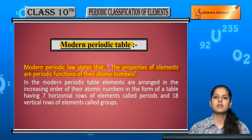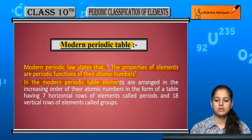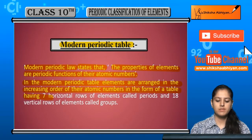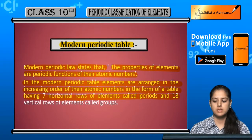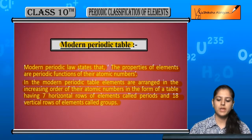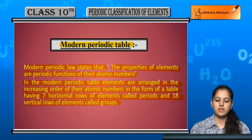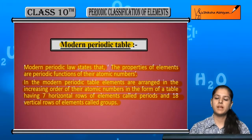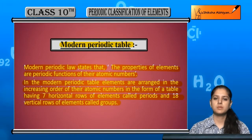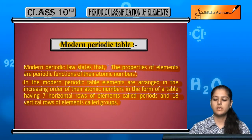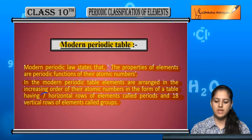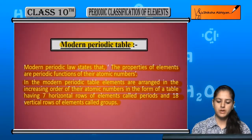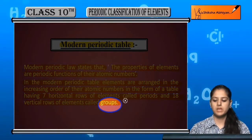So, the properties of elements are periodic functions based on their atomic numbers. In the modern periodic table, elements are arranged in the increasing order of their atomic numbers, in the form of a table having seven horizontal rows called periods and 18 vertical rows called groups.